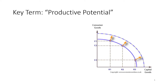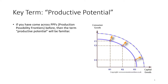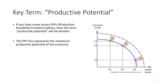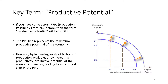This term productive potential may seem familiar if you have come across PPFs — production possibility frontiers — before. The PPF line represents the maximum productive potential of the economy at that point in time, showing the maximum quantity of consumer goods and capital goods you can produce in different combinations given the state of your factors of production and productivity. By increasing the levels of factors of production available or by increasing productivity, the productive potential increases, leading to an outward shift in the PPF. And this is what supply side policies aim to do.